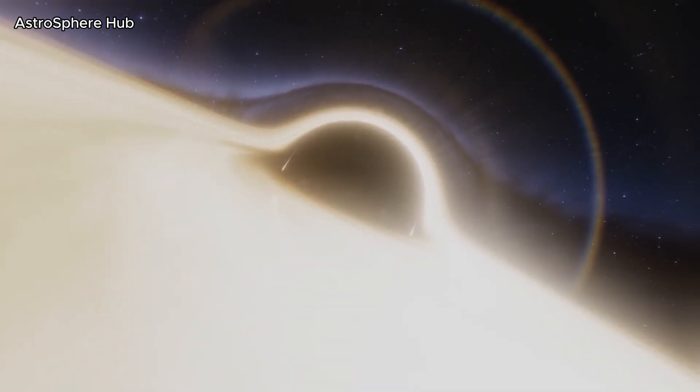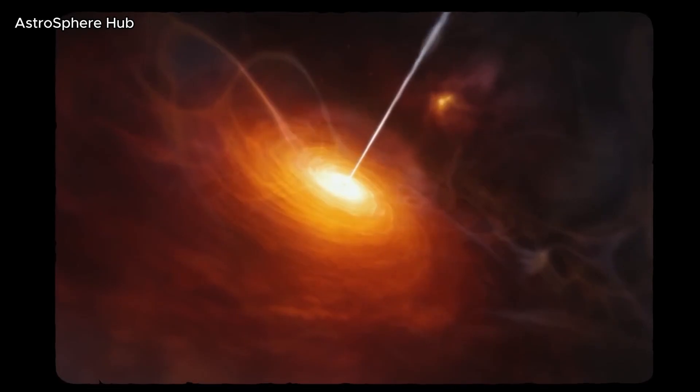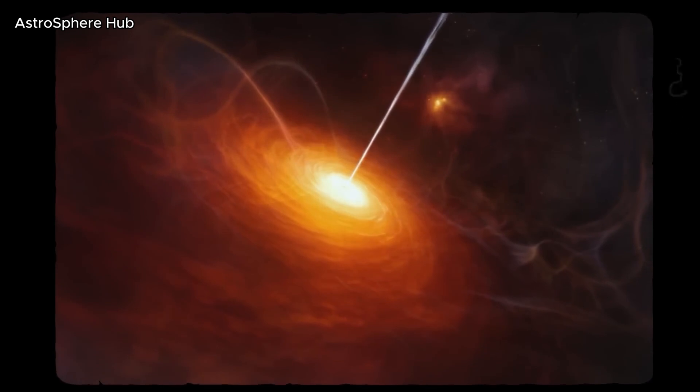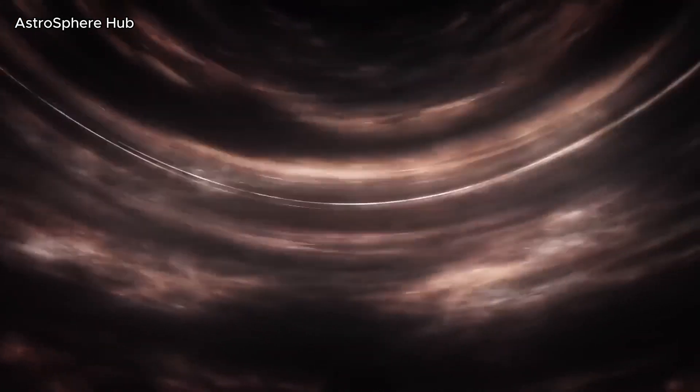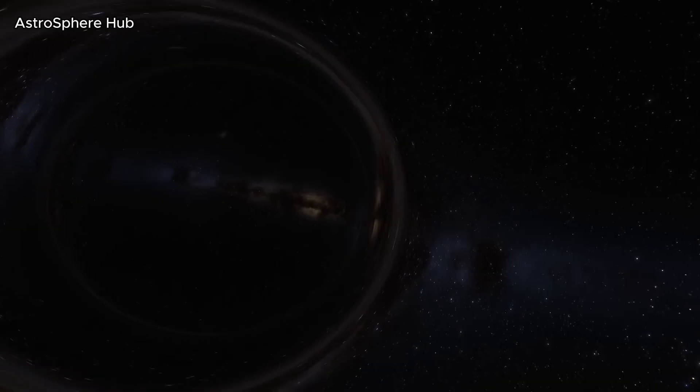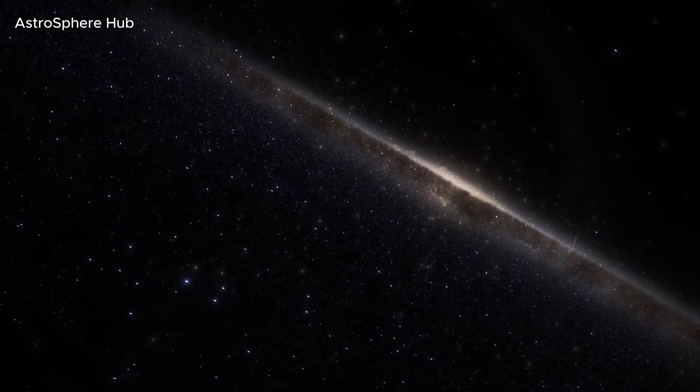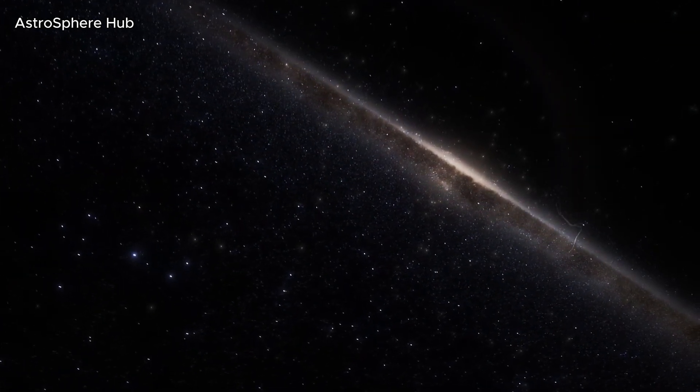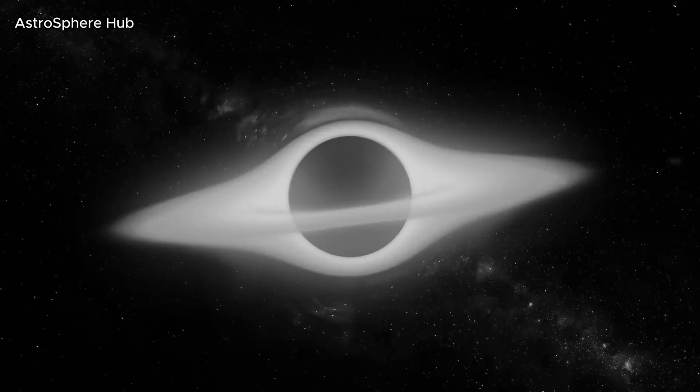And how about a journey to a planet that witnessed the first steps of our universe? The incredible world of Kapteyn b is only 13 light years away from us, but its age is estimated at 11.5 billion years, which is about two and a half times older than our Earth and only two billion years younger than the universe. But we're not just impressed by the age of this rock hurtling through space, but also all the things that may have happened on the surface of the planet throughout its existence.